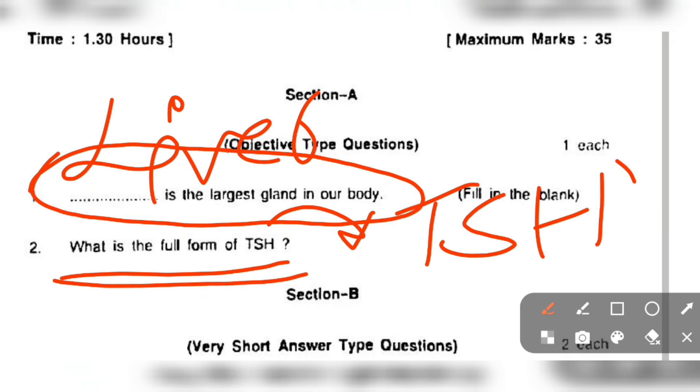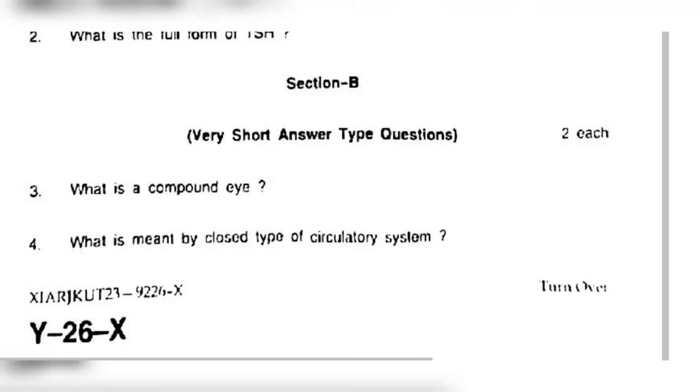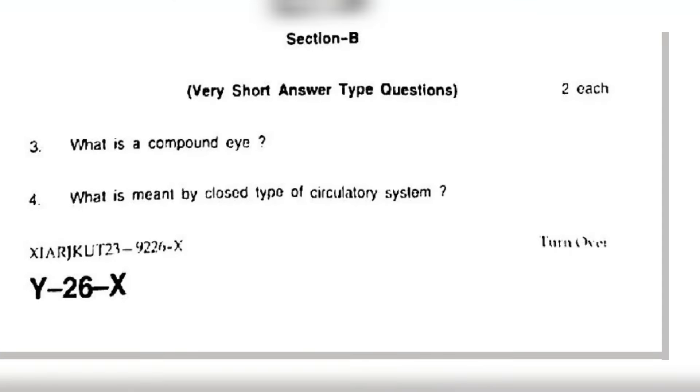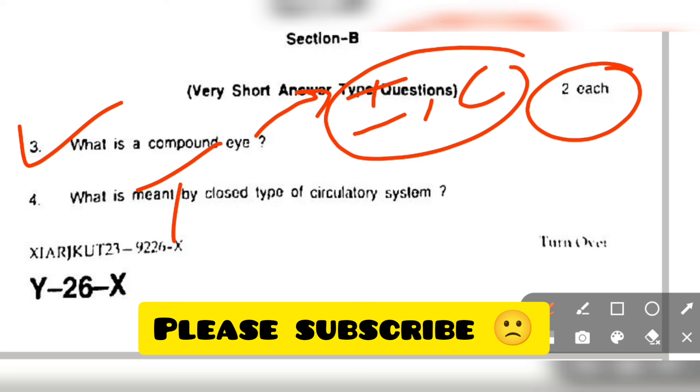Then we have Section B, here are short type answers. Every question has two marks. First, what is compound eye? Compound eye is mostly present in insects or crustaceans. I can say that this eye consists of hundreds and thousands of tiny sensitive parts.